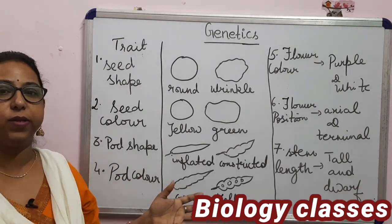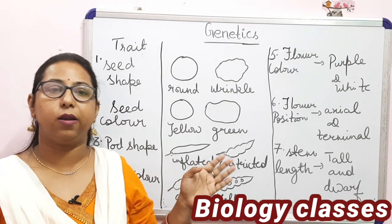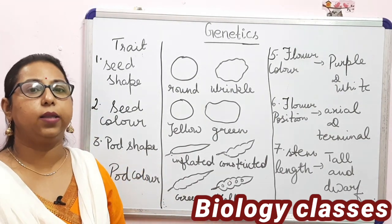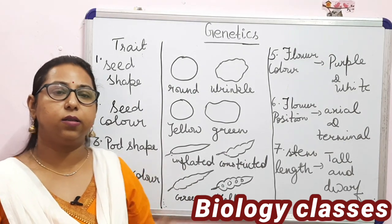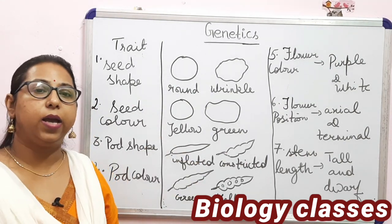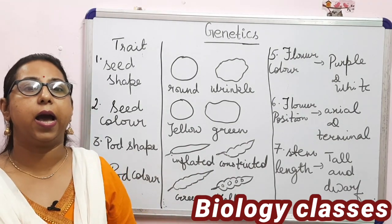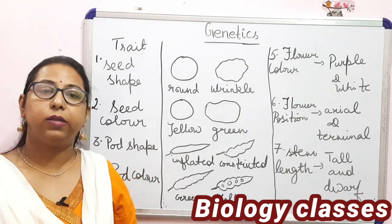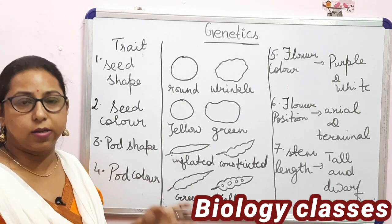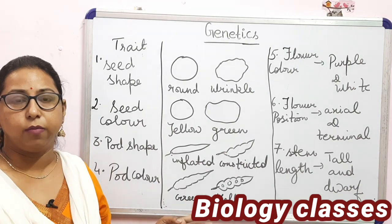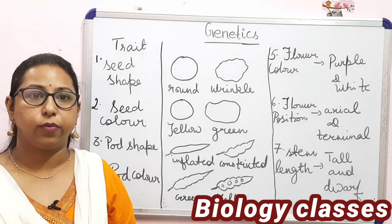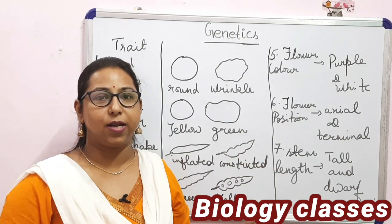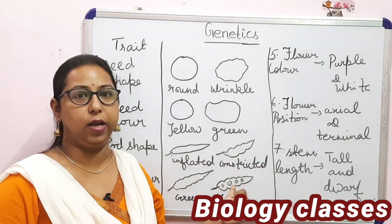Mendel conducted this experiment over nine years, performing numerous experiments and collecting all the data, expressing it properly in a mathematical manner. That is why Mendel's work was rediscovered by scientists — because logically, Mendel was correct. This is part one of the genetics series and it is not yet complete.